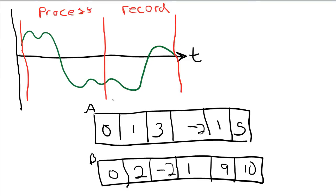You always have an index — I'll call it idx — that points to one of these buffers. We need a recording buffer, so the index points to the recording buffer, and then we have a process buffer defined as the buffer the index is not pointing to. With a ping-pong buffer you have two arrays and a pointer that tells you which is the active buffer — meaning which buffer we're currently dumping data into and which one we're not, because we need one buffer free for processing.